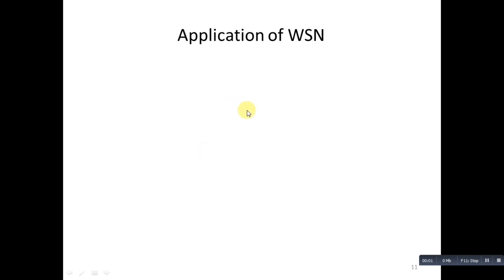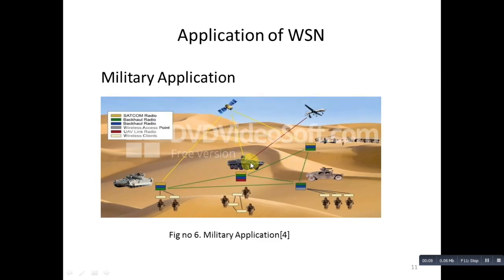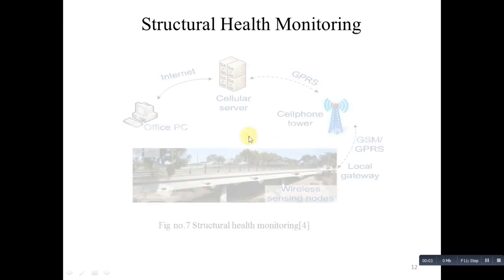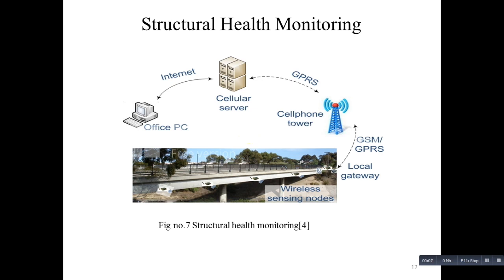Wireless sensor networks are used for monitoring, surveillance activity, and force protection. They are also used for enemy tracking, battlefield surveillance, target detection, and nuclear, chemical, or biomedical attack detection. The next application is Structural Health Monitoring: sensor networks are used in monitoring the health of buildings, bridges, and highways. It is possible to monitor stress, vibrations, temperature, and humidity of civil infrastructures. The figure shows the overall hardware design of a prototype wireless sensing unit and two optional off-board auxiliary modules for conditioning analog sensor signals and generating actuation signals.